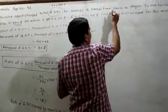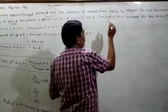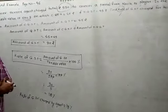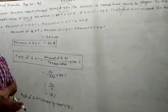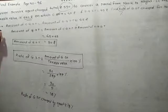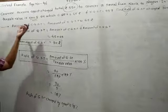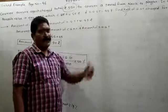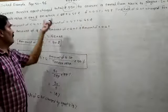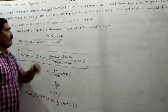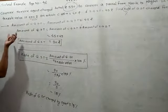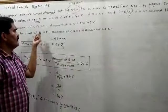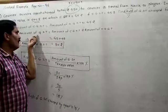You have to find out how much GST percent the agent charges from the customer. To solve this, you need to see the amount of CGST and SGST. The amount of CGST is equal to the amount of SGST, which is ₹45. The taxable value is ₹500. The total GST is equal to CGST plus SGST.